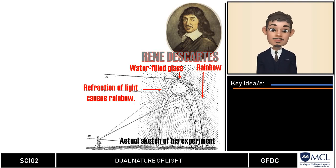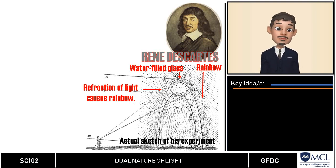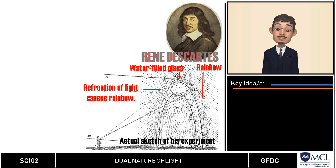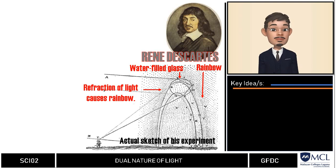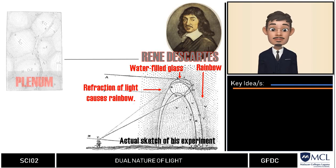In his observation, he noted that the different colors of light are refracted at varying degrees, where he further noted that red light refracted more than violet light. From this observation, he explained the wave nature of light using a concept called plenum.